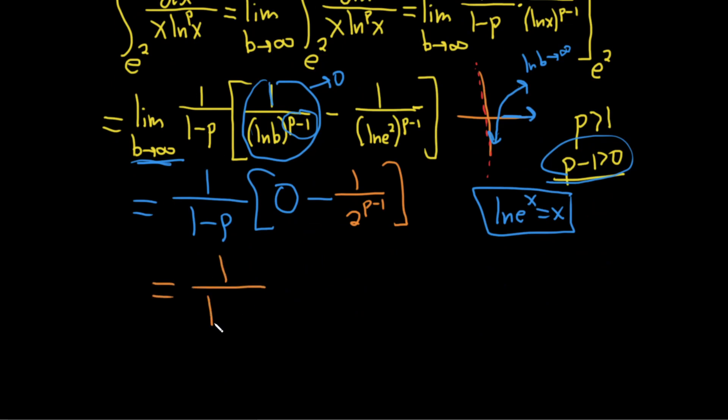So this is 1 over 1 minus p times negative 1 over 2 to the p minus 1. Let's clean this up a little bit. I'm going to take this negative 1 here and distribute it downstairs over here. This is 1 over p minus 1 times, and then this is 1 over 2 to the p minus 1. That's pretty good. I guess we could leave it like that.